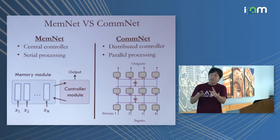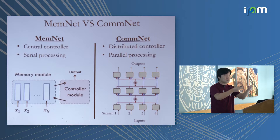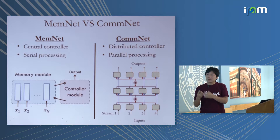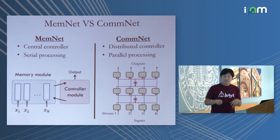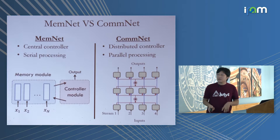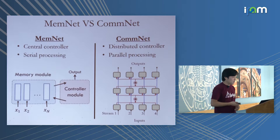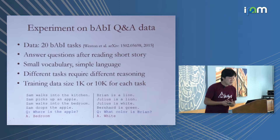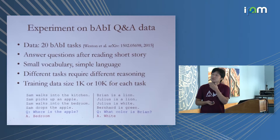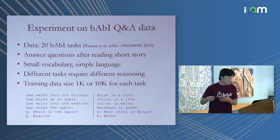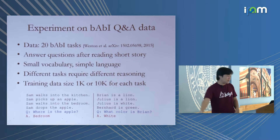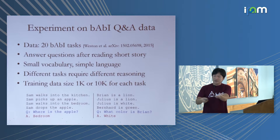It's interesting to compare the two approaches. On one side, the memory network has a central controller that sequentially attends to each element and produces a single output. On the other hand, the communication network gives each set element its own processor — it's a distributed approach — and elements can send messages to each other through the network. So we have a centralized versus decentralized approach to the same problem.